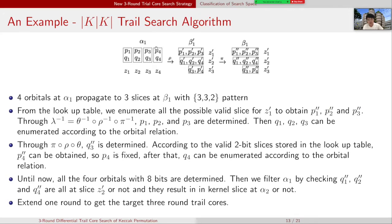After that, Q4 can be enumerated according to the orbital relation. So until now, all the four orbitals with eight bits are determined. Then we filter all our state α1 by checking Q1′, Q2′ and Q4′ are all at slice Z2′ or not, and check they result in kernel slices at state α2′ or not. After that, we extend one more round to get the target three-round trail cores.